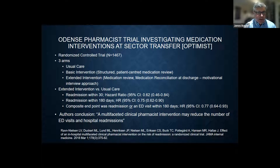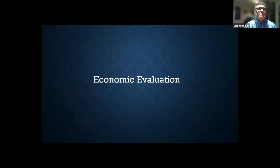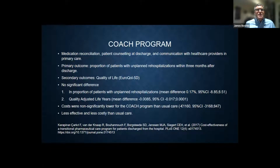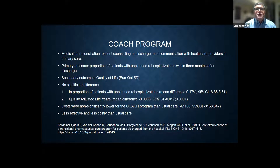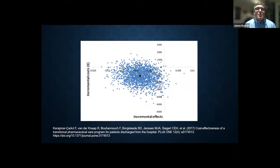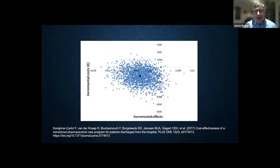Looking at economic evaluation, I was only able to find one or two examples — this is from the COACH program. Again, it is an intervention consisting of multiple components, and it is very challenging to try and separate out all these components. This study found it was actually less effective and less costly than usual care. So looking at the traditional scatterplot, the intervention has lower quality of life overall but also at lower costs, which doesn't necessarily bode well for the evidence. That said, there are cost-effectiveness analyses that show that in certain patient populations, medication reconciliation is a cost-effective intervention.